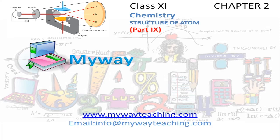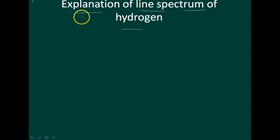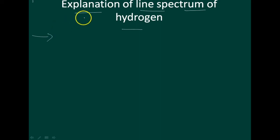This video is brought to you by mywayteaching.com. Now I will explain the line spectrum of hydrogen. In the line spectrum of hydrogen, this is a very important property associated with the electron in the energy, which is stationary and is given by the following equation.